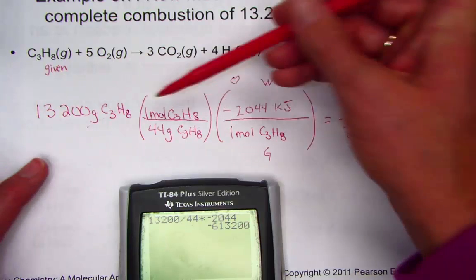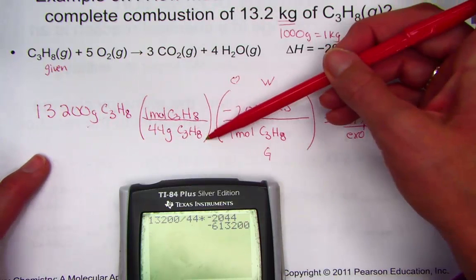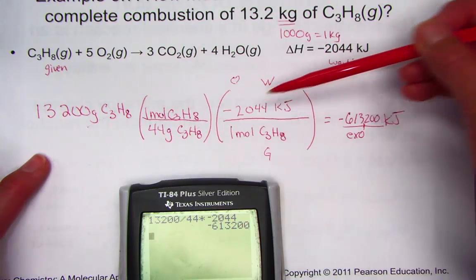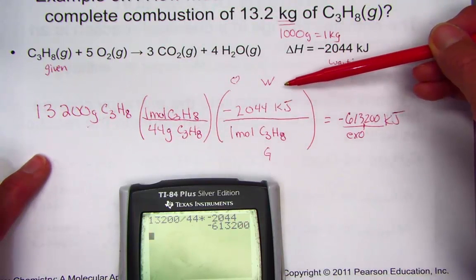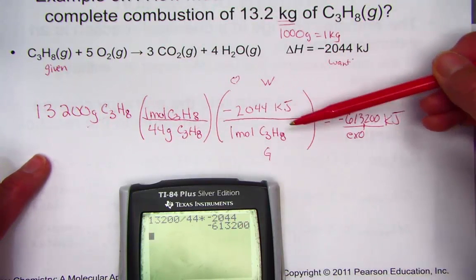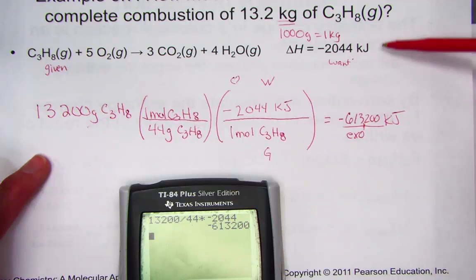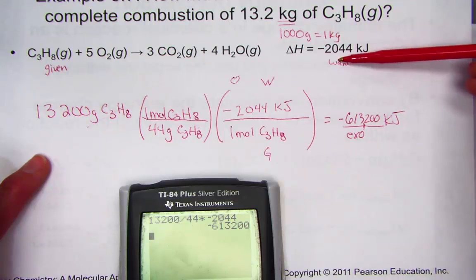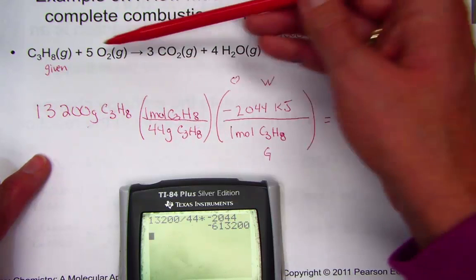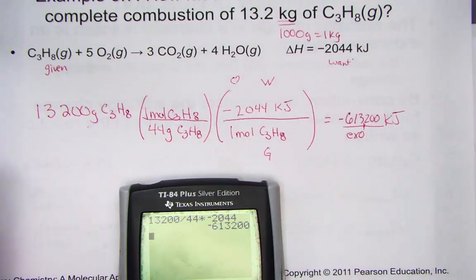We used a mole conversion and then a stoichiometric ratio — want over given — where we targeted kilojoules from the moles of reactant propane.